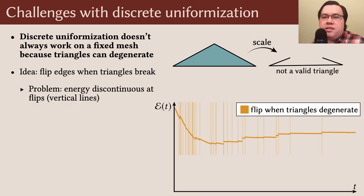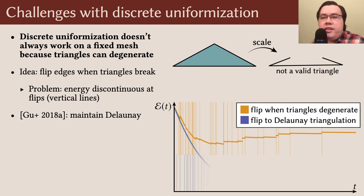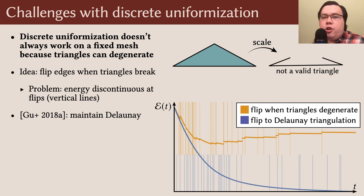However, these edge flips, shown as vertical lines in the plot, cause discontinuous jumps in the energy, voiding any guarantee that the flow will converge to a minimizer. Later in 2018, Gu and colleagues proposed performing edge flips during the flow to maintain a Delaunay triangulation instead. These Delaunay flips keep the energy nice and continuous, C2 even, meaning that the flow will provably converge.